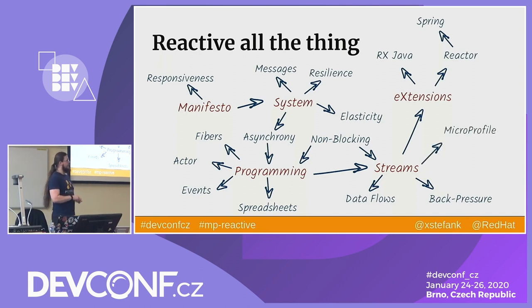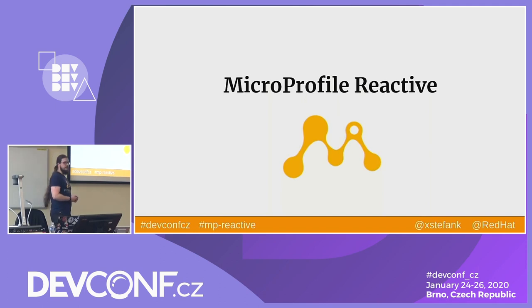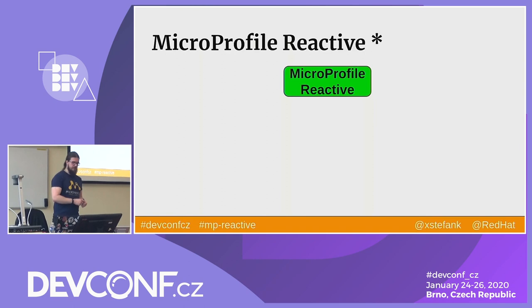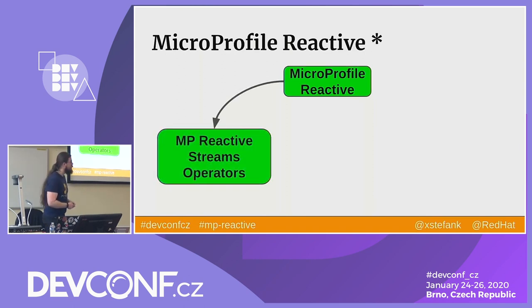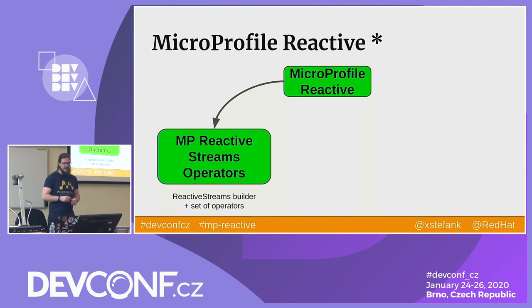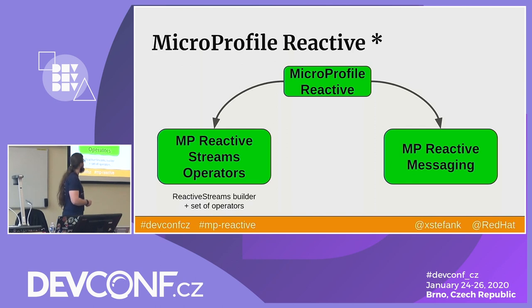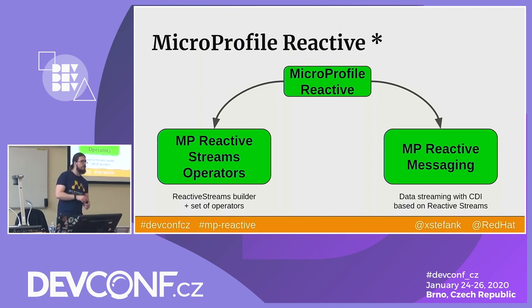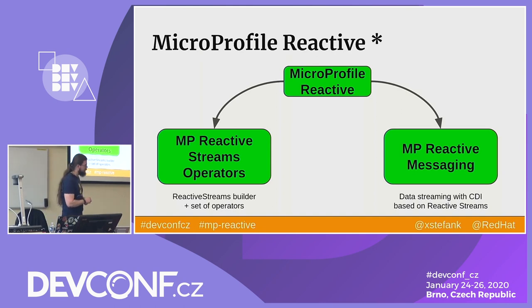This is exactly where MicroProfile comes in. MicroProfile Reactive is in fact two separate specifications. The first is MicroProfile Reactive Stream Operators, which is a single-class reactive streams builder with a set of operators like map, flatMap, etc. The other is MicroProfile Reactive Messaging, which is the main specification providing a mapping of reactive streams into a CDI model. You can create CDI beans and define the processing of reactive streams using just two annotations — so you are not touching the API directly, you're just saying that you want to consume or produce messages.